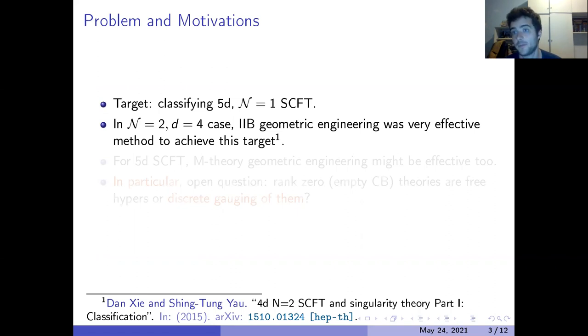The similar problem in dimension four was very successfully faced using Type IIB geometric engineering because at that point one has a very good dictionary to map all the quantities from the superconformal field theory side to geometric data of the Calabi-Yau over which we are geometric engineering with Type IIA/IIB. Then we can, instead of classifying superconformal field theories, classify Calabi-Yau singularities with some special properties.